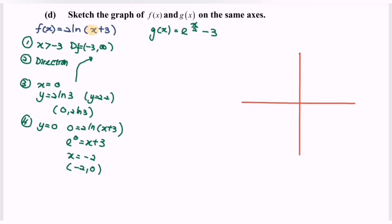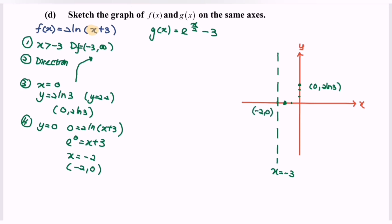Now we sketch the graph. The asymptote is x = -3. We have the y-intercept at (0, 2ln3) ≈ (0, 2.2), and the x-intercept at (-2, 0). So the graph of f(x) = 2ln(x+3) passes through these points, approaching the vertical asymptote at x = -3.